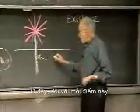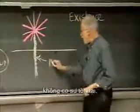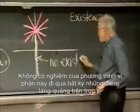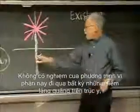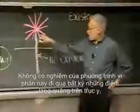Here, there is no, for each of these points, there is no existence. There is no solution to this differential equation which goes through any of these wiggly points on the y-axis.